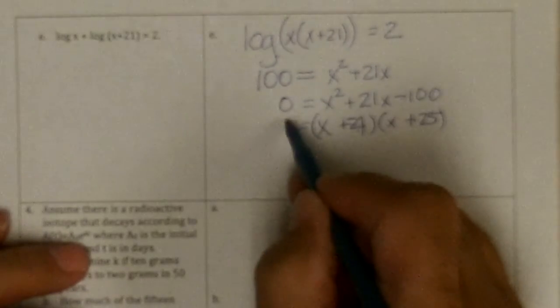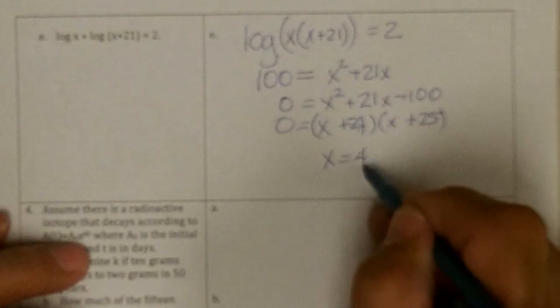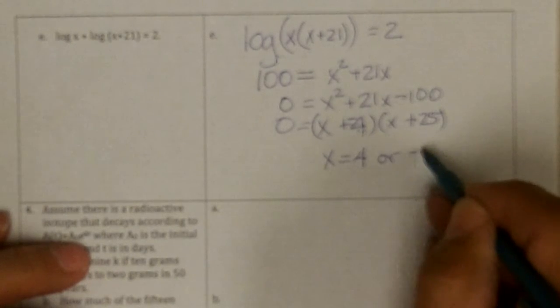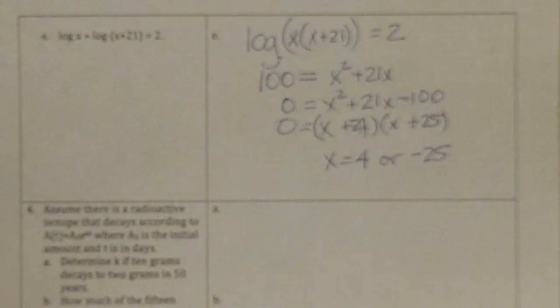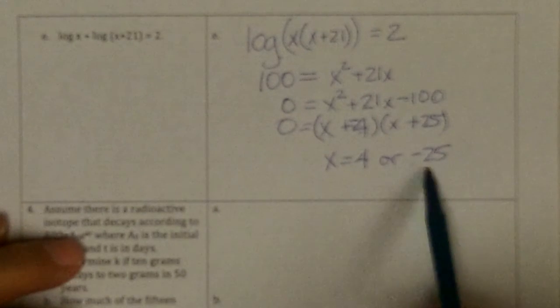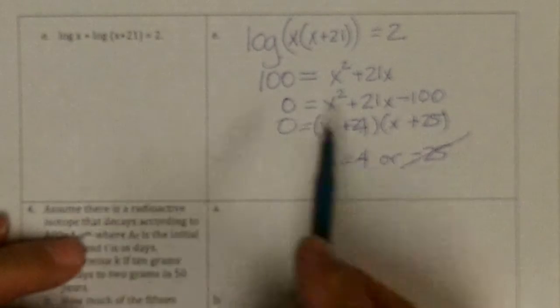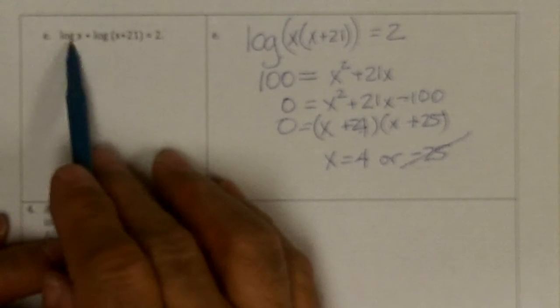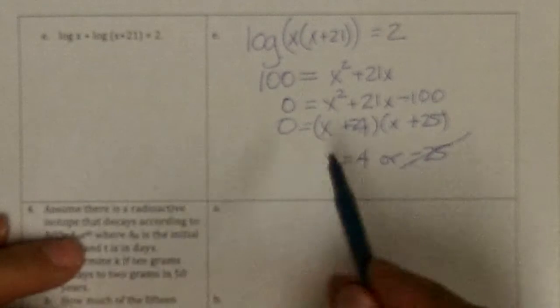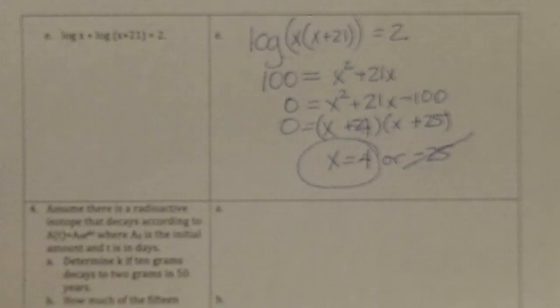If I set each of those equal to 0, I get x equals 4 or negative 25. I'm dealing with logs, so I need to check my answer. Can I use negative 25 here? No. Can I use 4 in here? That would be positive. This would be positive, so yes. So x equals 4 is the only solution to that one.